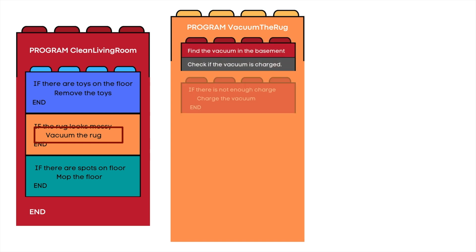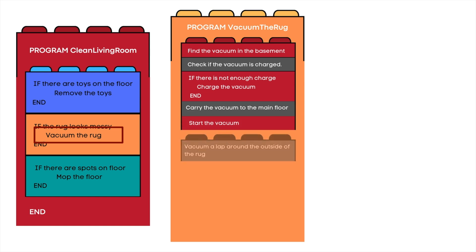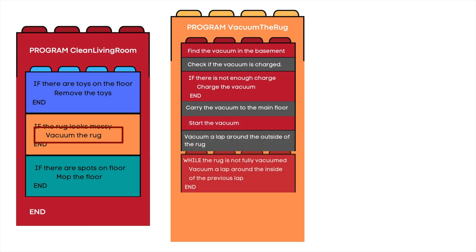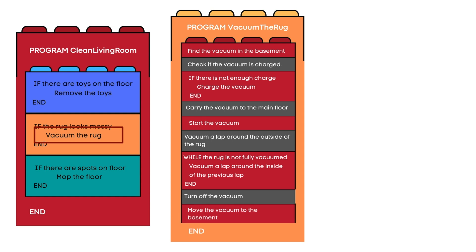If there is not enough charge, charge the vacuum. Carry the vacuum to the main floor, start the vacuum, vacuum a lap around the outside of the rug, and while the rug is not fully vacuumed, vacuum a lap around the inside of the previous lap. Then turn off the vacuum and move the vacuum to the basement. If you look carefully, we still have sub-tasks like 'charge the vacuum' to accomplish, which we can flesh out further.